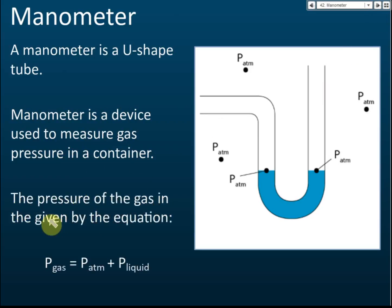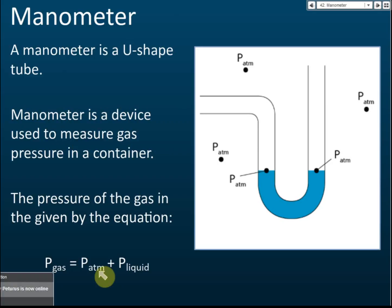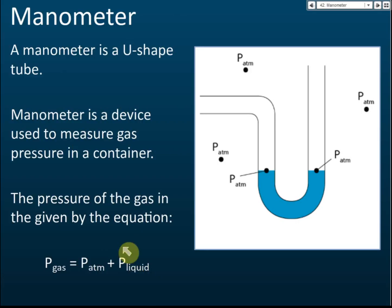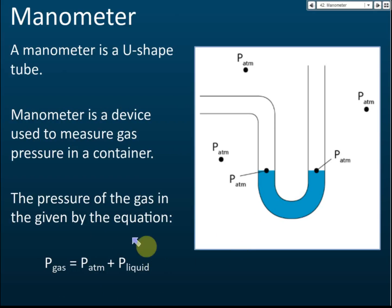The pressure of the gas is given by the equation: the pressure of the gas equals the atmospheric pressure plus the pressure of the liquid. I'll discuss later how to measure using this manometer and how to use this formula to find the gas pressure.